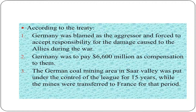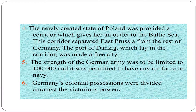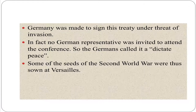Germany was to pay 6,600 million dollars as compensation. The German coal mining area in the Saar Valley was put under the control of the League for 15 years, while the mines were transferred to France for that period. The newly created state of Poland was provided a corridor giving her an outlet to the Baltic Sea, which separated East Prussia from the rest of Germany. The port of Danzig, which lay in the corridor, was made a free city. The strength of the German army was limited to one lakh and it was not permitted to have any air force or navy. Germany's colonial possessions were divided amongst the victorious powers. Germany was made to sign the treaty under threat of invasion; no German representative was even invited to attend the conference. So the Germans called it a diktat peace. Some of the seeds of the Second World War were thus sown at Versailles.